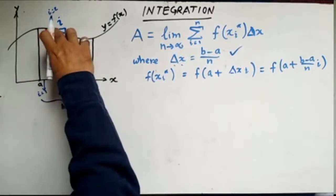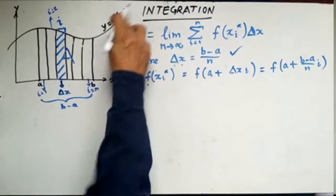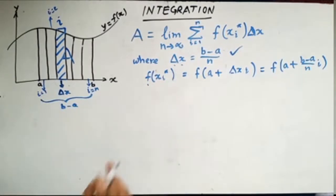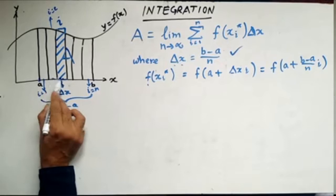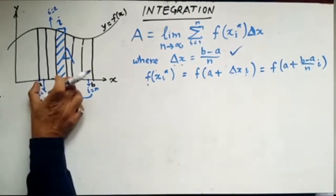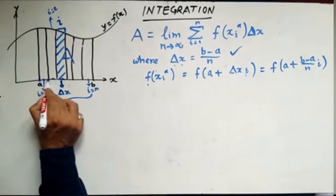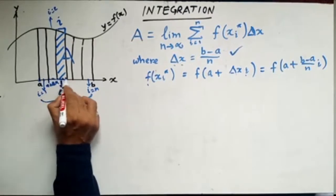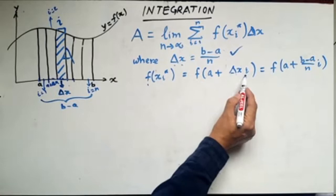The value of the function at the ith interval is what we call f(x_i*), the value of y at that point of x. Since we are starting from a, in the ith interval it will be a plus the number of delta x's up to that point. So the positions go: a, then a plus delta x, a plus 2 delta x, a plus 3 delta x, a plus 4 delta x, and so on until we reach b.